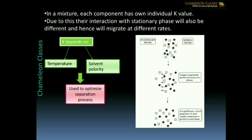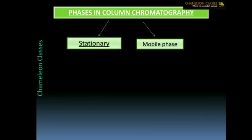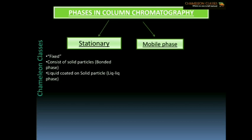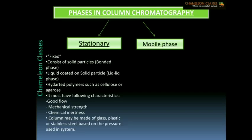There are two phases in column chromatography: the stationary phase and the mobile phase. The stationary phase is the fixed phase and consists of solid particles — this is called bonded phase chromatography — and sometimes a liquid is coated on these solid particles. Hydrated polymers such as cellulose or agarose are used as the stationary phase. The stationary phase must have good flow characteristics, mechanical strength, and must be chemically inert, as any reaction with the sample may disturb its original conformation.